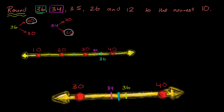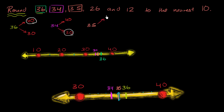Now let's try a really interesting one — rounding 35 to the nearest 10. Let's think about the two options first. We've already seen that 35 is sitting right in the middle on this number line. We can either round it up to 40 or round it down to 30.